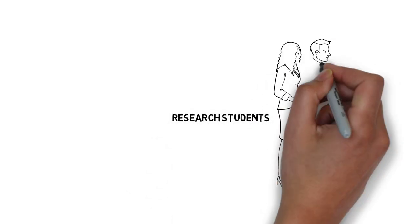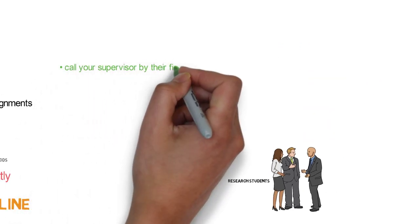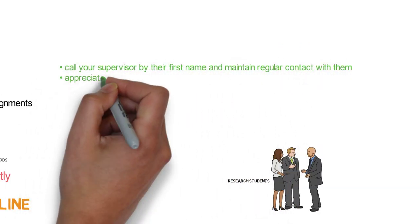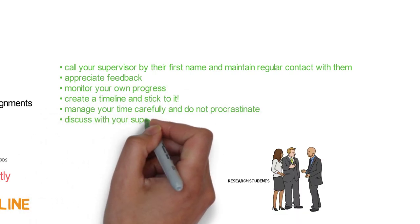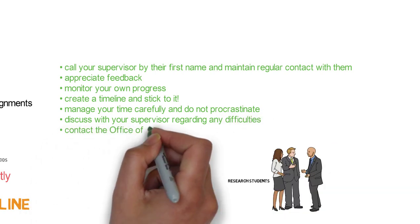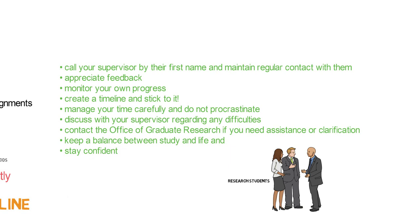If you are a research student studying Master by Research or a PhD candidate, remember to call your supervisor by their first name and maintain regular contact with them. Appreciate feedback. Monitor your own progress. Create a timeline and stick to it. Manage your time carefully and do not procrastinate. Discuss with your supervisor regarding any difficulties you may have. Contact the Office of Graduate Research if you need assistance or clarification.